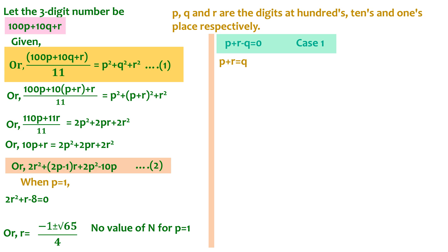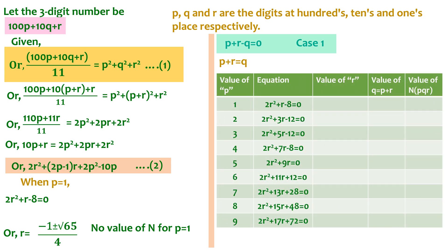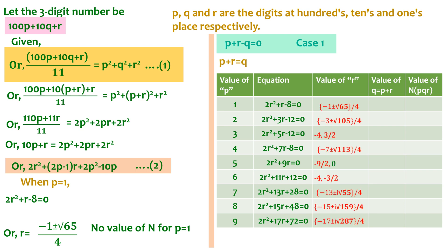Similarly, we substitute p = 2, 3, 4, 5, 6, 7, 8, and 9 into equation 2 and get the corresponding values of r. We can see that we do not get a feasible value of r for any value of p except for p = 5, where we get r = −9/2 and r = 0. Since −9/2 is not a natural number or even an integer, we discard that value and take r = 0 as the feasible value.